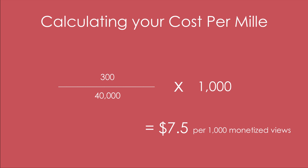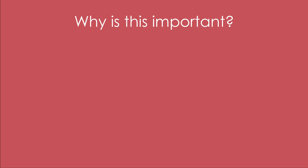That $7.50 is typically the average YouTube CPM — I would say between seven and eight dollars is the average. That's really great to know. The main thing for me is you can use CPM to create earnings goals, because now you know how much you make for every 1,000 monetized views.